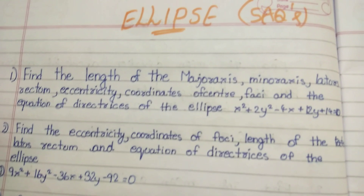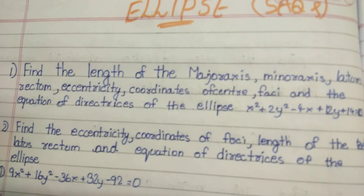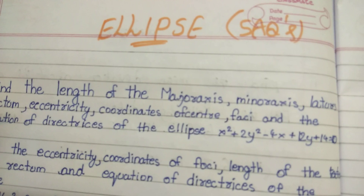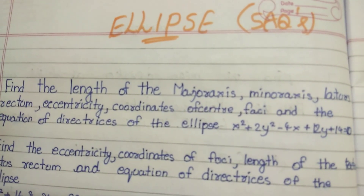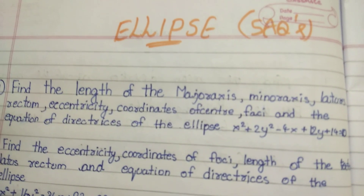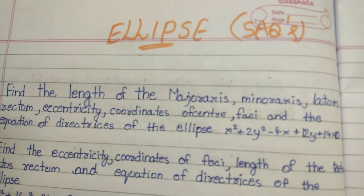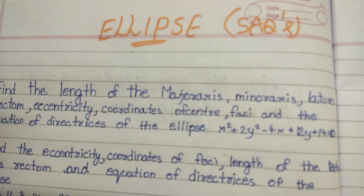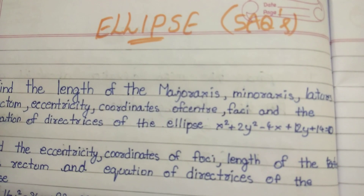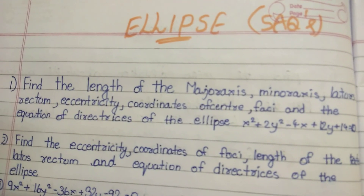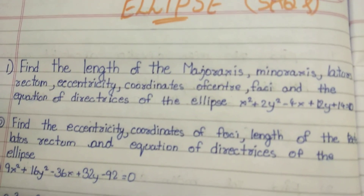Okay, you will know the first one and the last one. Find the length of the major axis, minor axis, latus rectum, eccentricity, coordinate of center, foci, and the equation of the directrix of the ellipse. The equation is x² + 2y² − 4x + 12y + 14 = 0. Okay, that's the problem. We will find out — this is very important.